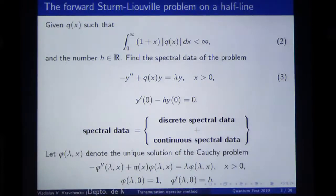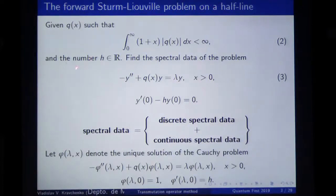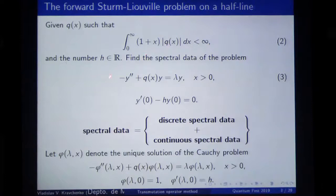I would like to mention that when Q grows at infinity, computationally it is much more easy, because you just need to put some virtual boundary and ask that your solution be zero at the boundary — that's it. When the potential decays, it's much more challenging computationally. We will suppose that some initial condition is zero. This is a very standard setting of the problem on a half line.